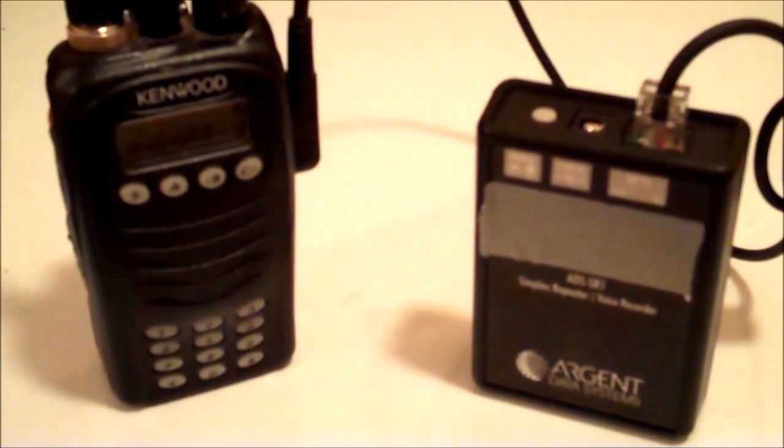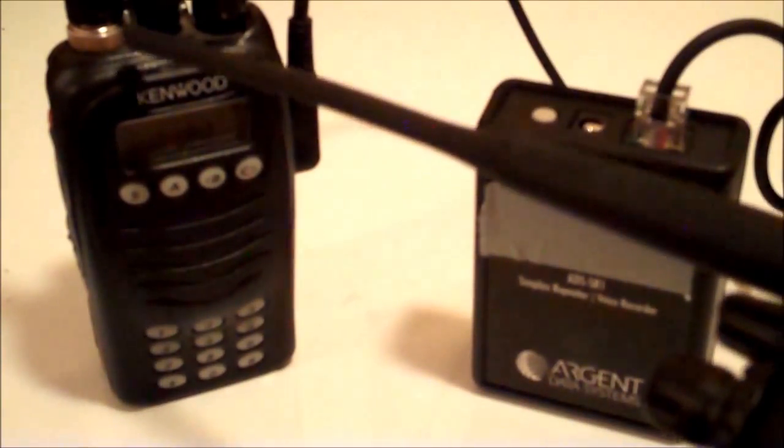So I'm going to do a demo here and what you'll see is I'll be transmitting from this handheld. The green light on this radio will light up for receive, be digitally recorded into the simplex repeater. When my transmission ends, the simplex repeater will play that message back out on this radio and it'll be received on this radio. So here we go.